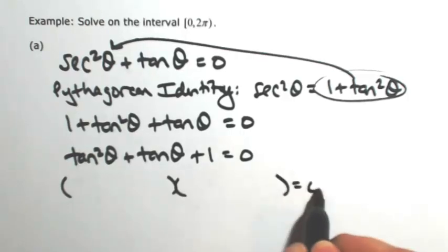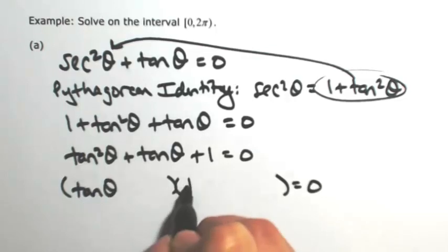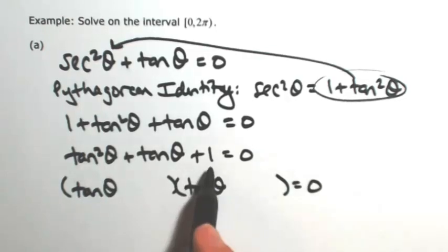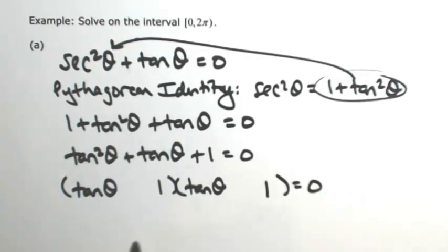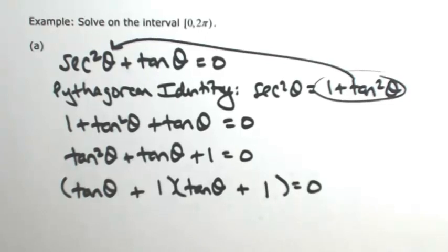At this point you would go ahead and try to factor this. So to get tangent squared, I need a tangent times itself. To get a 1, I need 1 times itself. And then to get a plus and a plus, I need a plus and a plus. But this doesn't work.